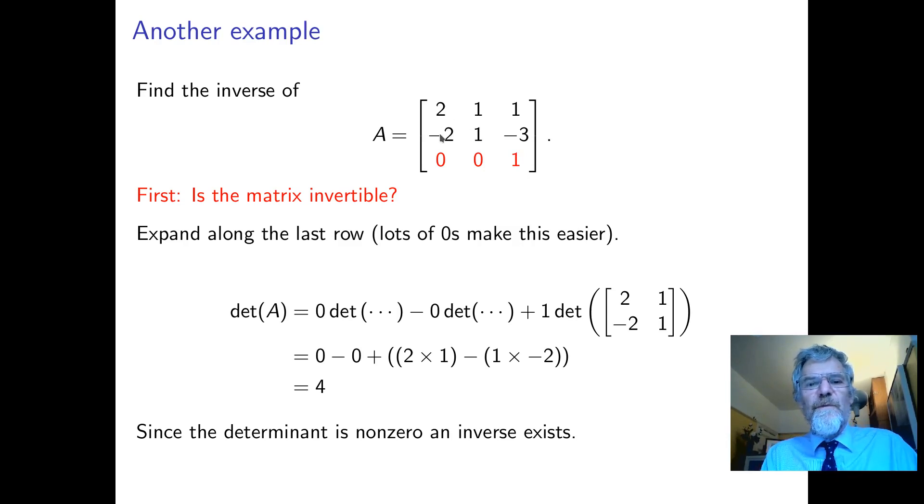So two times one minus minus two times one, minus and minus come together and so we get a determinant of four. So that's not zero. So it has an inverse and what we've got to do is find it.